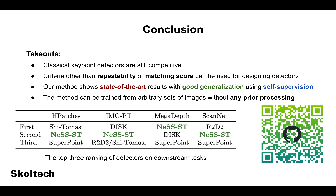The presented method, NESS-ST, shows state-of-the-art results, good generalization over datasets with different semantics and a variety of downstream tasks. The method can be trained with self-supervision from arbitrary sets of images without any prior preprocessing. For more information, please visit our GitHub page. Thank you for your attention.